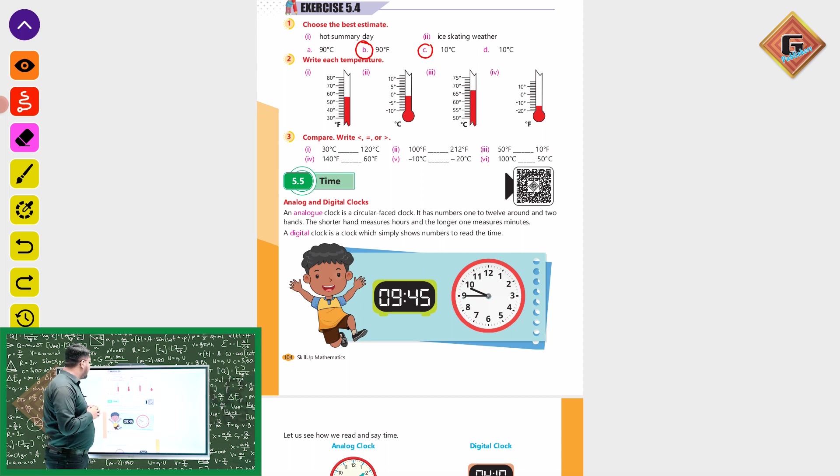Question: write each temperature. We will write Fahrenheit and degree Celsius. For Fahrenheit, we have to represent 50, 52, 54, 56.